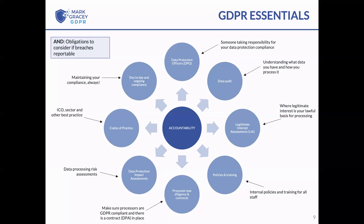Data protection impact assessments are essentially a risk assessment of data processing activities, allowing you to identify and mitigate risks. They also support the principle of data protection by design and by default. If people ask me what's the minimum a business should do, it's: have the register of processing activities, document your data processing, and have policies and training in place.